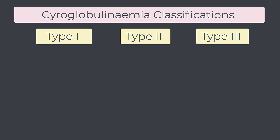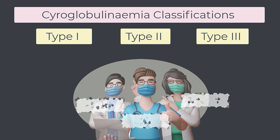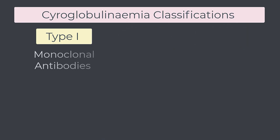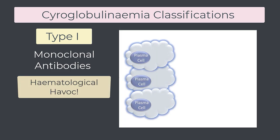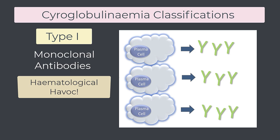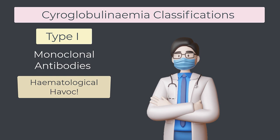In clinical practice, we divide cryoglobulins into three types: type one, type two, and type three. Type one includes monoclonal antibodies — a solo, singular kind of vibe. We now know that monoclonal antibodies mean hematological misbehavior: a clonal population of cells producing the same antibody over and over for no reason except hematological havoc. So this type of cryoglobulin shall be allocated to the hematology specialist to review.